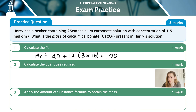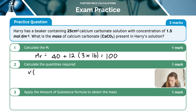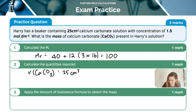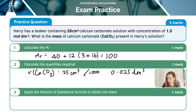Now we calculate the quantities required. The volume of the calcium carbonate solution — V(CaCO₃) — is 25 centimetres cubed. To convert that, we divide by 1000, giving 0.025 decimetre cubed. I need to have the volume in decimetre cubed to do the calculation.